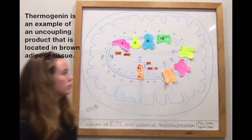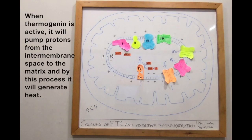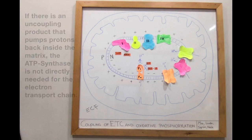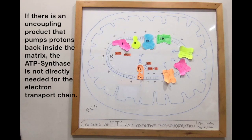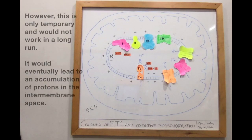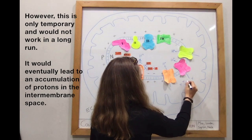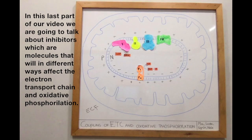Thermogenin is an uncoupling product located in brown adipose tissue. When thermogenin is active, it pumps protons from the intermembrane space to the matrix, and by this process it generates heat. We can therefore say that there are exceptions for when the electron transport chain and oxidative phosphorylation are dependent on each other. If an uncoupling product pumps protons back into the matrix, the ATP synthase is not directly needed for the electron transport chain. However, this is only temporary and would not work in the long run, as it would eventually lead to an accumulation of protons in the intermembrane space.